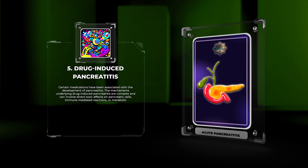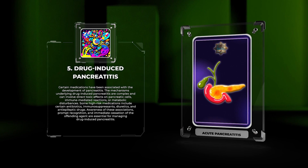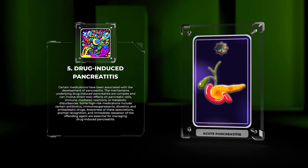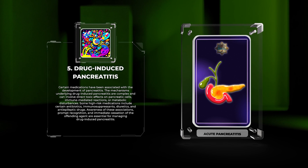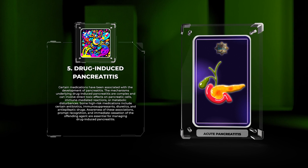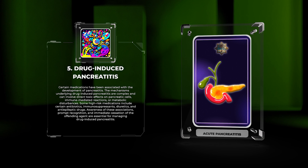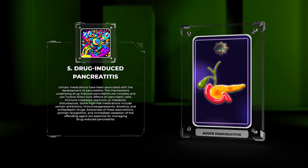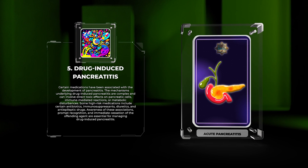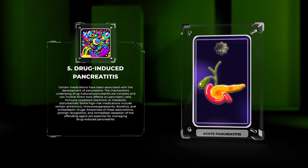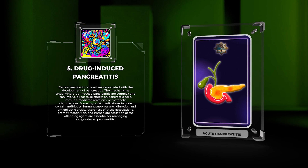Certain medications have been associated with the development of pancreatitis. The mechanisms underlying drug-induced pancreatitis are complex and can involve direct toxic effects on pancreatic cells, immune-mediated reactions, or metabolic disturbances. Some high-risk medications include certain antibiotics, immunosuppressants, diuretics, and anti-epileptic drugs. Awareness of these associations, prompt recognition, and immediate cessation of the offending agent are essential for managing drug-induced pancreatitis.